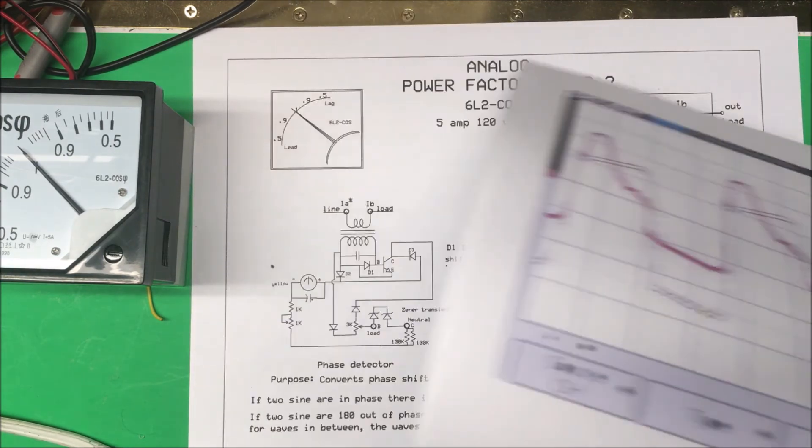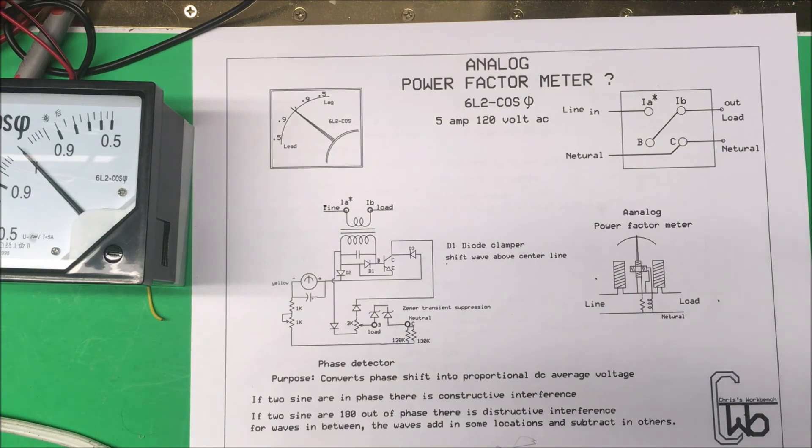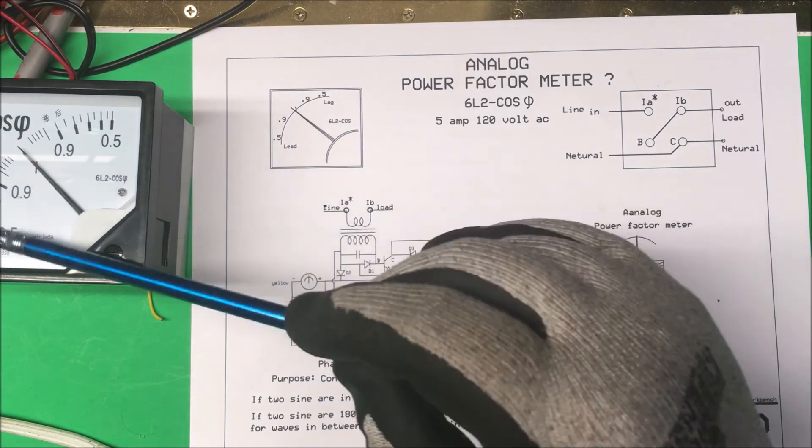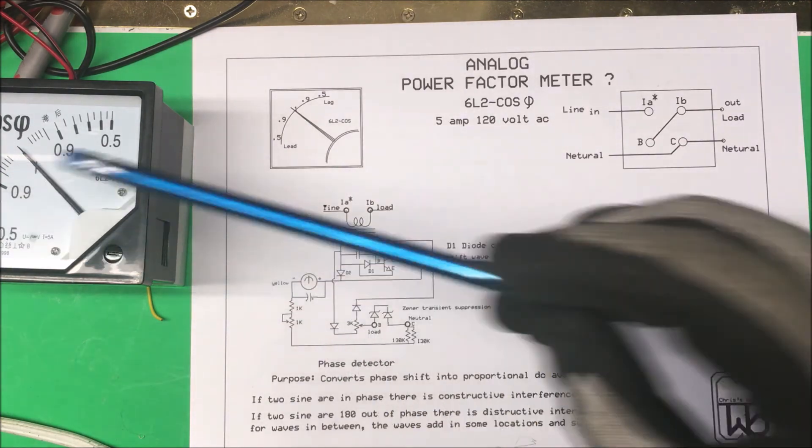The meter is only going to go in one direction, not both. So this isn't really a power factor meter, it's more of a phase detector. It'll detect the difference in phases there, which is fine, but you know it's kind of useless this side's kind of useless here.